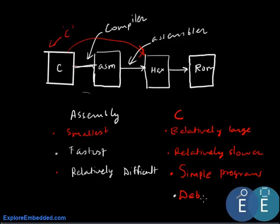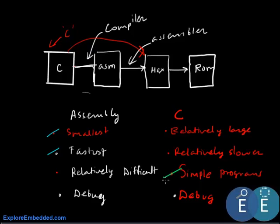One more advantage of writing in C is that the program is readable and can be easily debugged. In assembly, though the program is readable, it is very hard to debug. So the advantages of assembly are smaller program size and faster execution, but writing programs in C is simpler, debugging is easier, and code written in C can be easily transferred to a different controller or processor.